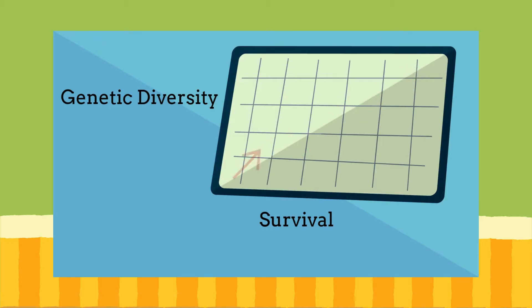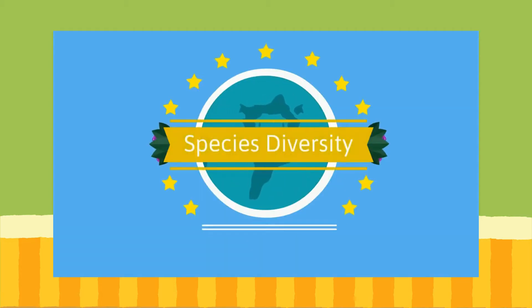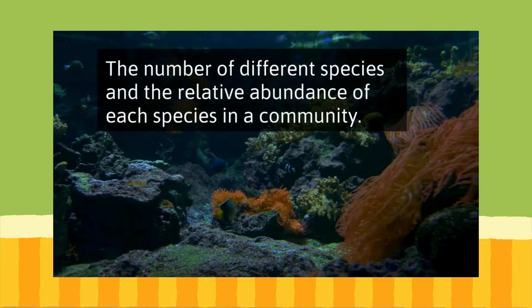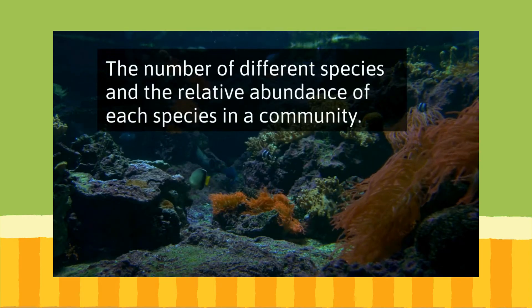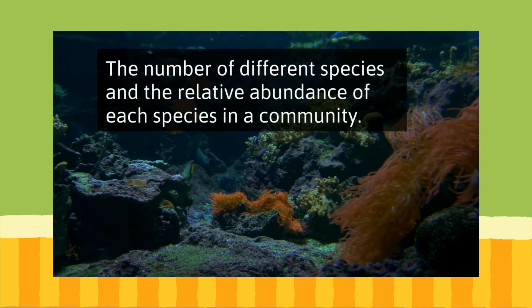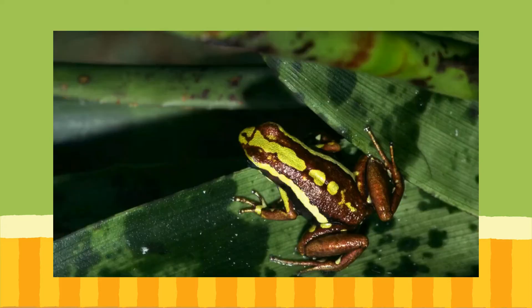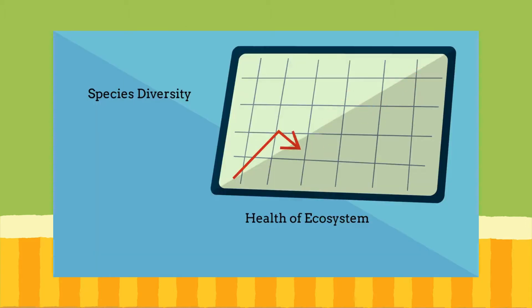Species diversity is the number of different species and the relative abundance of each species in a community. A rainforest may have 3 to 50 million different types of species living in the forest. As species diversity increases, most likely the health of the ecosystem increases.